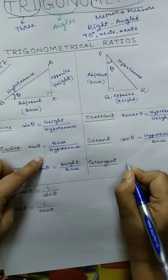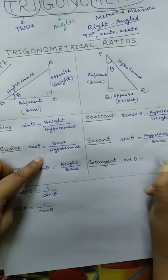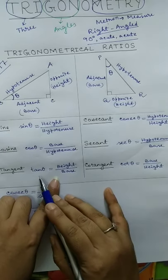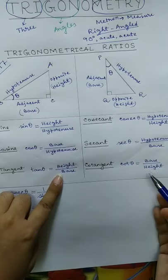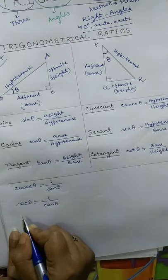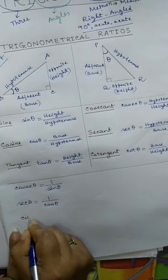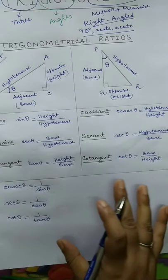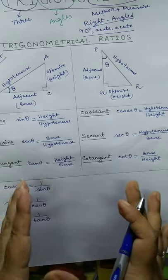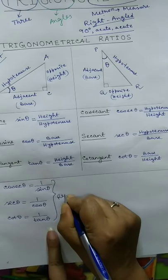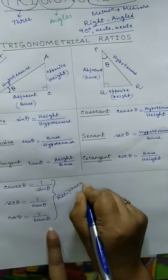For the last one, cotangent, written as cot theta, equals base by height. Since tan theta was height by base, this is exactly the inverse. So we write: cot theta equals 1 by tan theta. These relations are known as reciprocal relations.